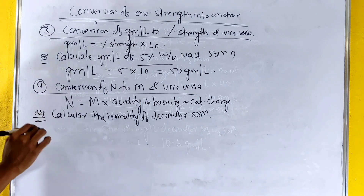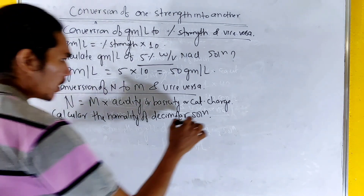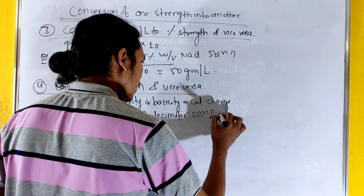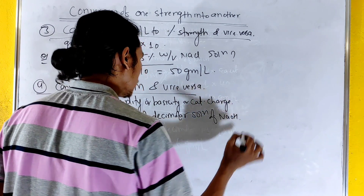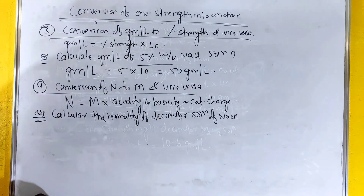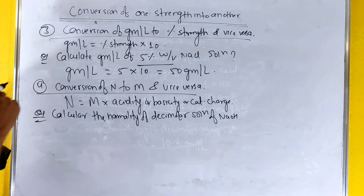Decimolar solution of NaOH — the basicity is the number of replaceable OH minus groups in NaOH.